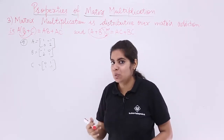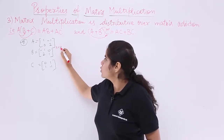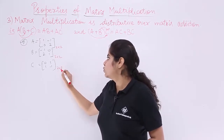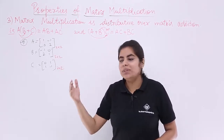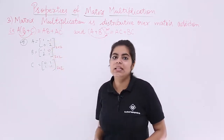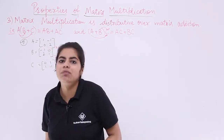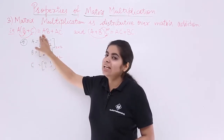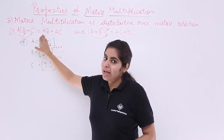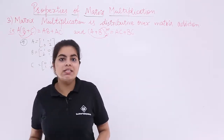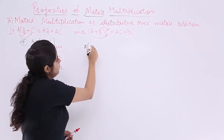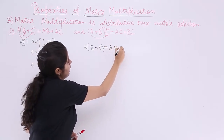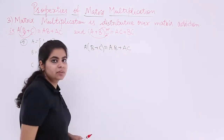As you can see, all these matrices are square matrices — two rows, two columns each. Both distributive forms mean the same thing. Let's prove the first one: A(B + C) = AB + AC. That means A is multiplied first with B, then A is multiplied with C.